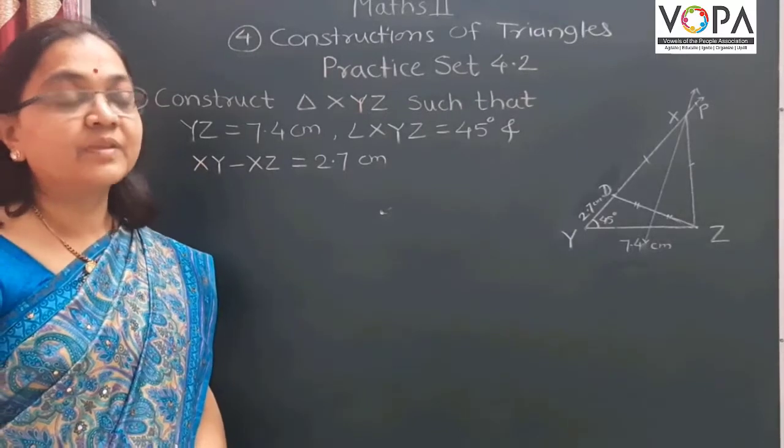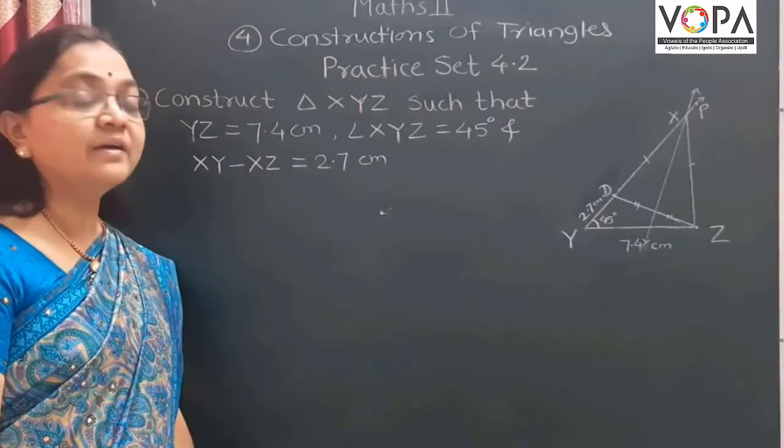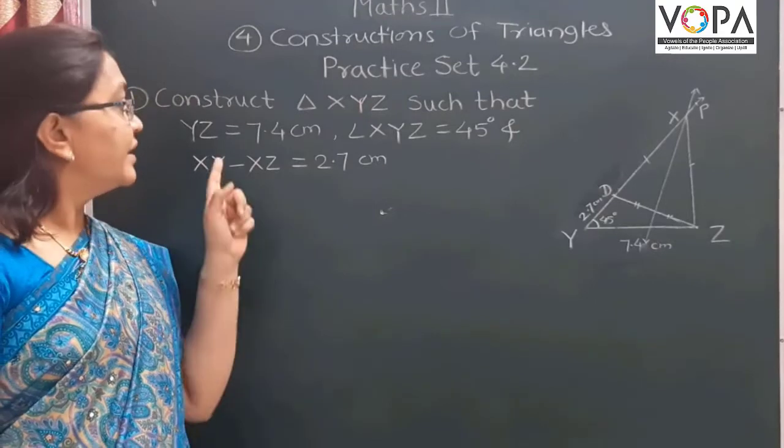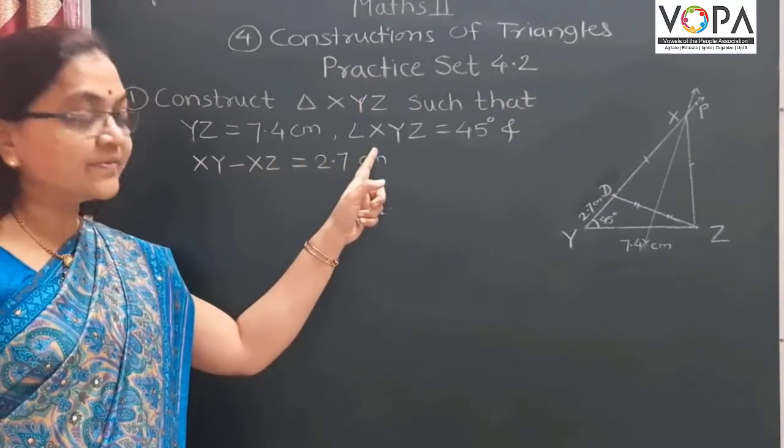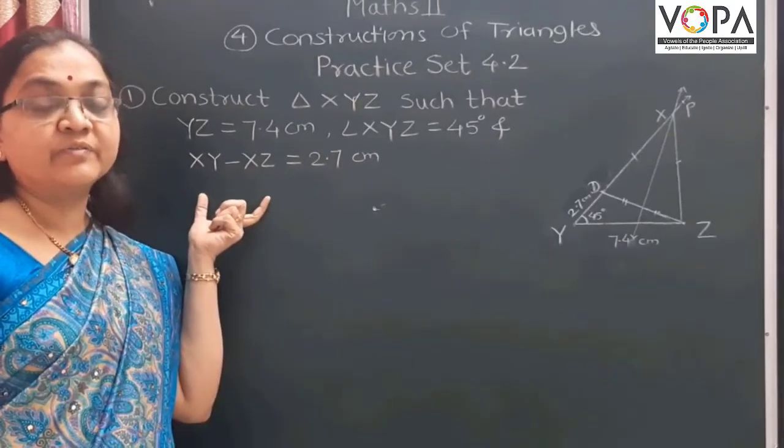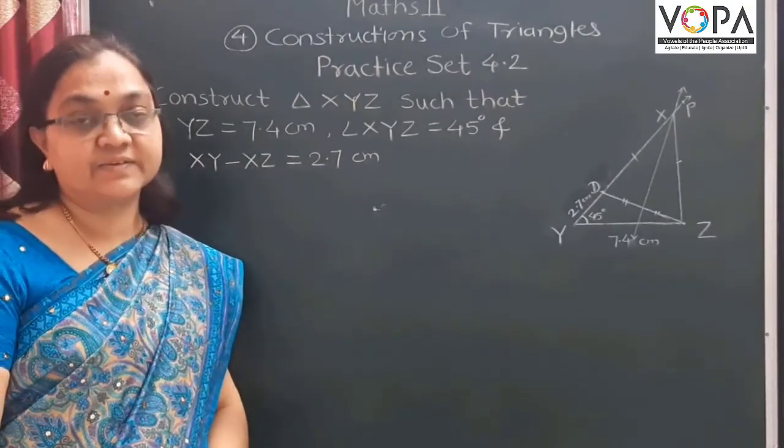In this example, we have to construct triangle XYZ. The base of that triangle is given, one base angle is given, and the difference between the remaining two sides is given.